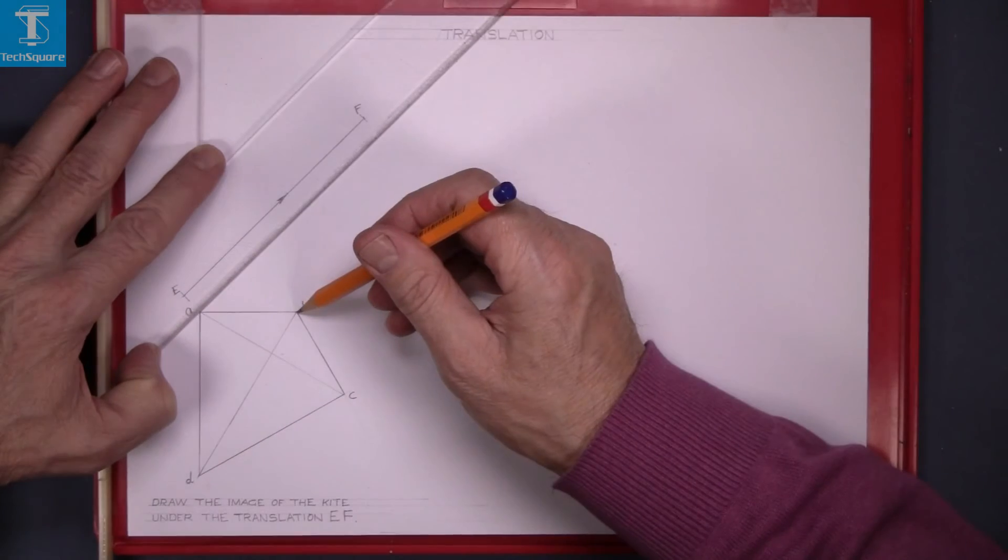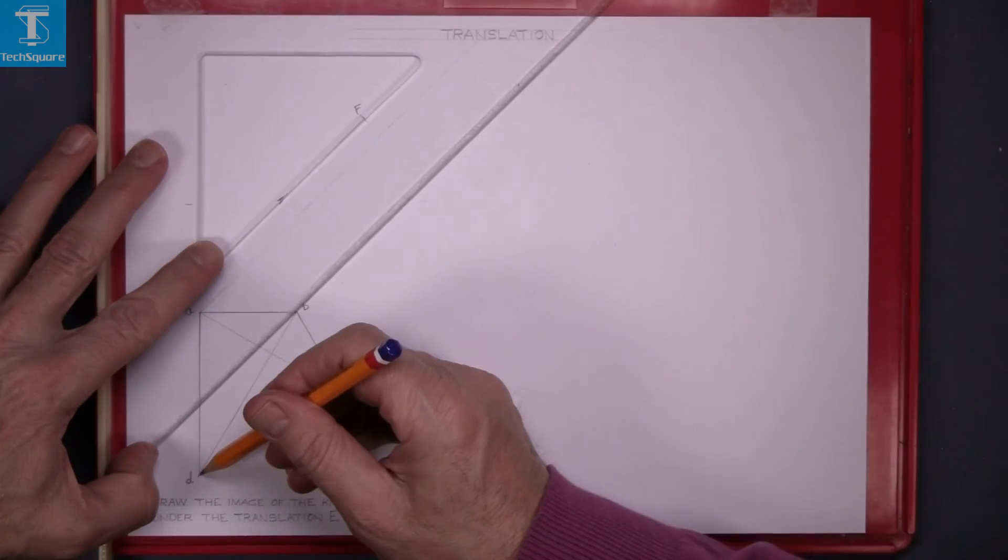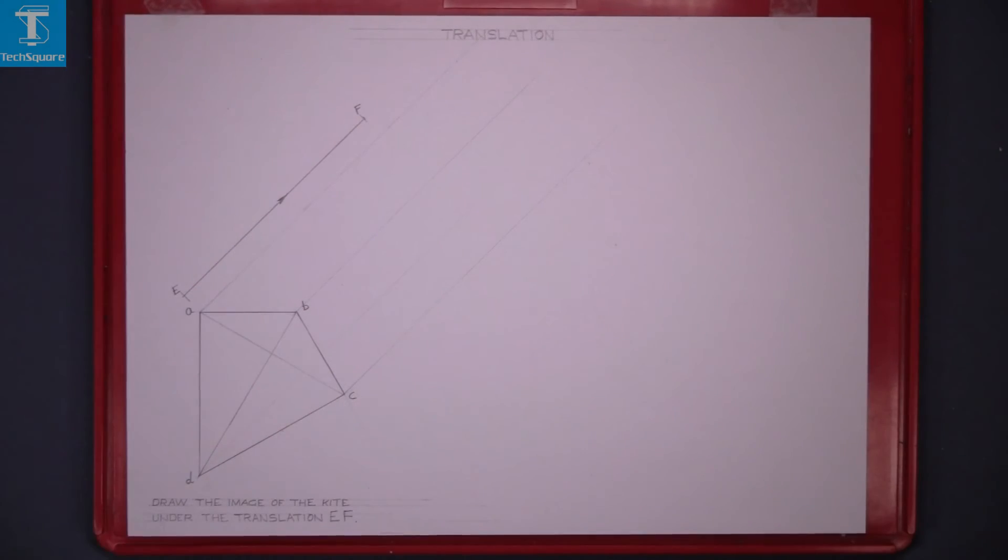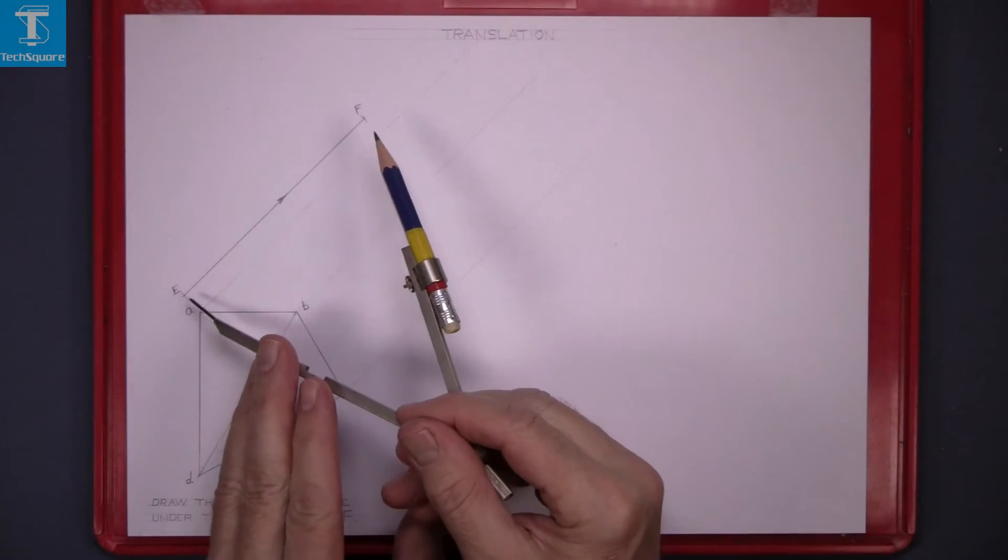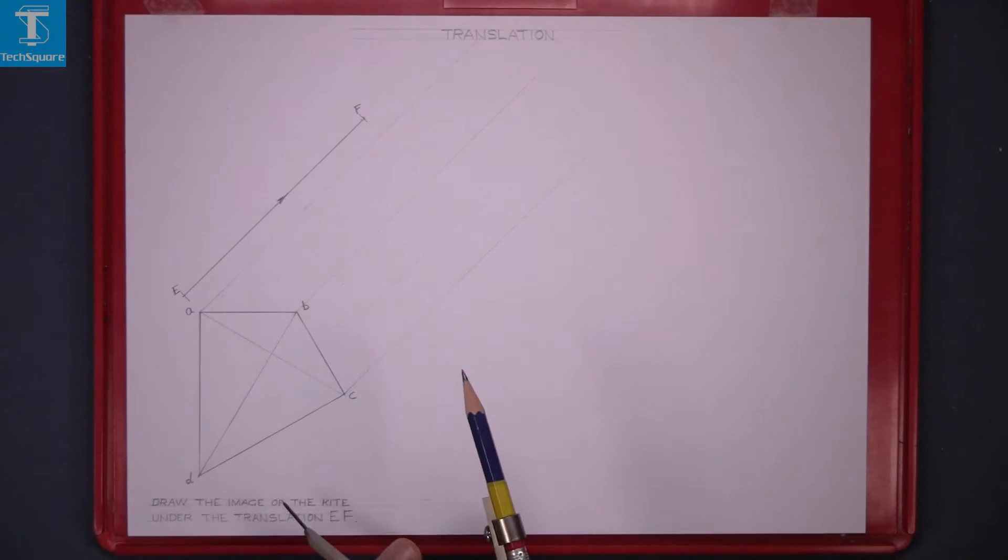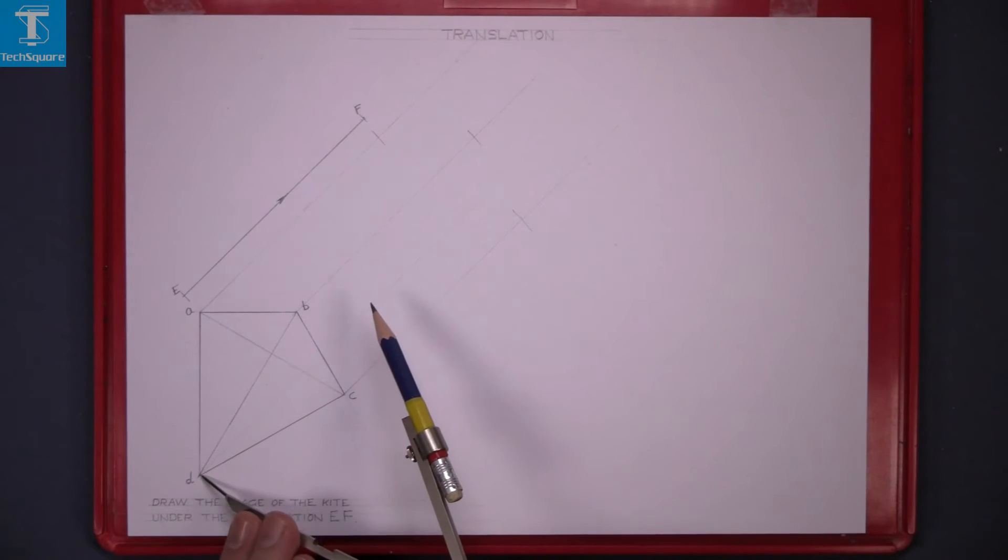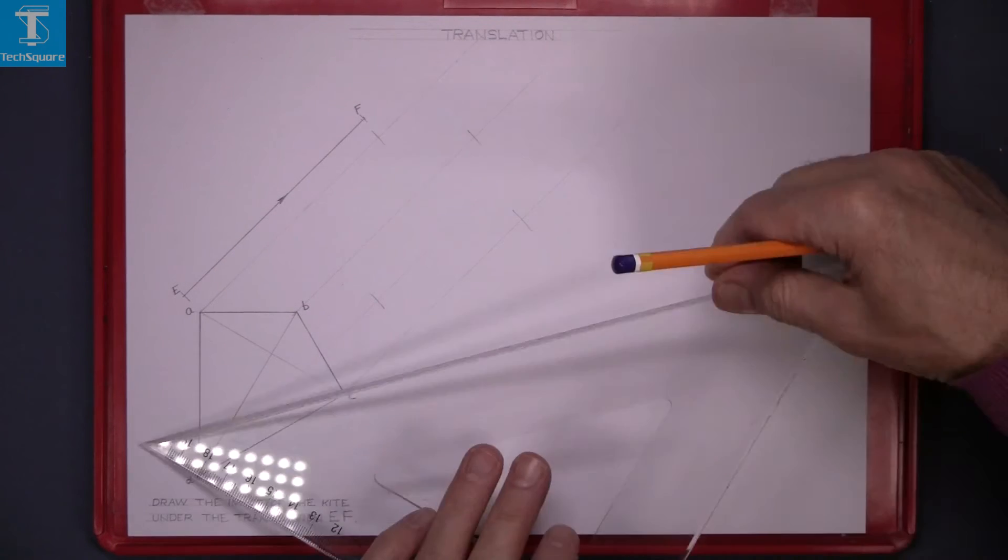So draw from each point on the kite parallel to EF. Set the compass to the length of EF and step it off on each line. And now line in the new shape.